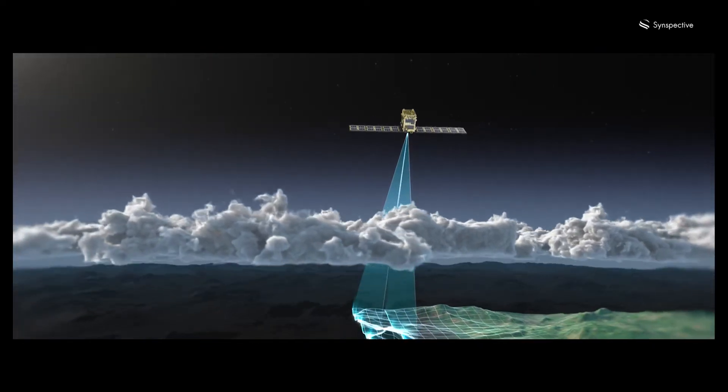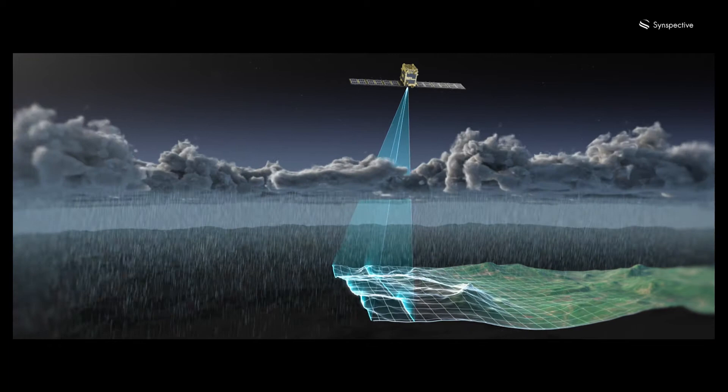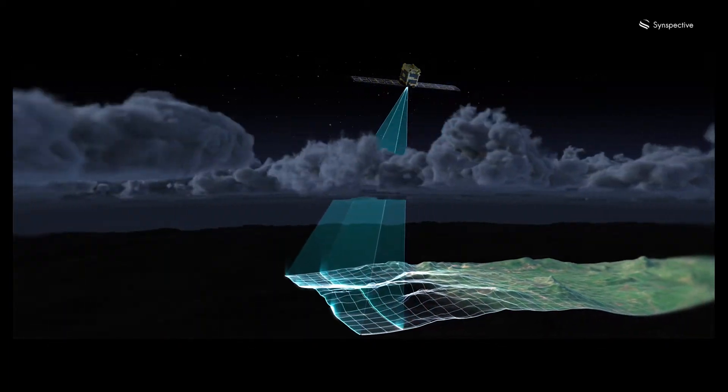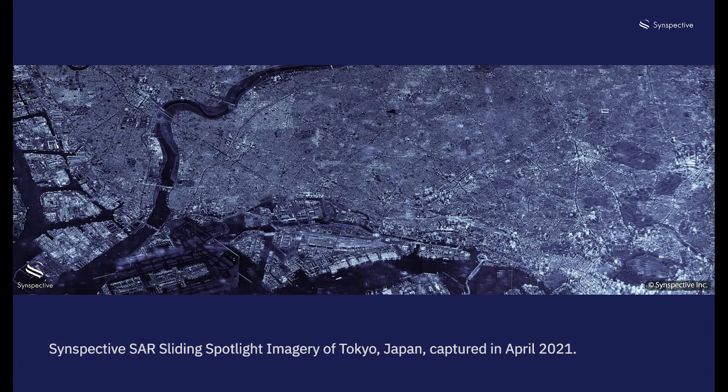SAR can actually penetrate cloud cover and is not sensitive to the availability of light, unlike regular optical satellites. Usually SAR images such as these undergo some degree of processing. Raw images do contain a fair amount of noise, while a nicely focused SAR image kind of resembles black and white photography.